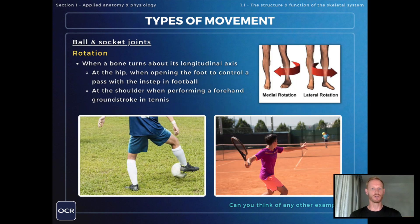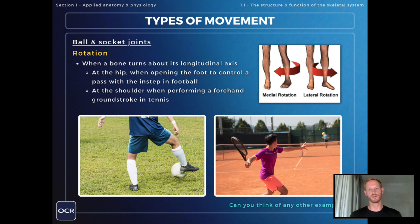Rotation is when a bone turns about its longitudinal axis — we'll look at the axes of rotation in topic 1.3. Rotation can be seen at the hip when opening the foot to control a pass with the instep in football, and that would be an example of lateral rotation.